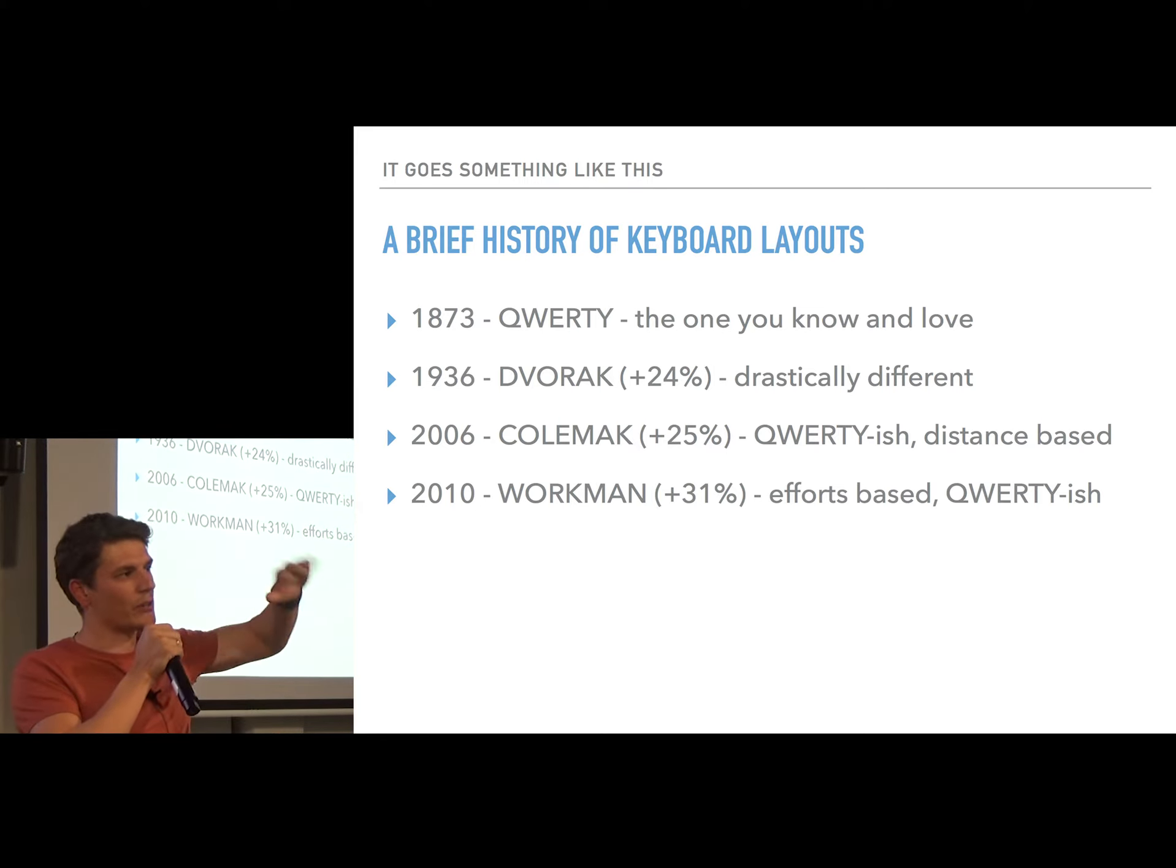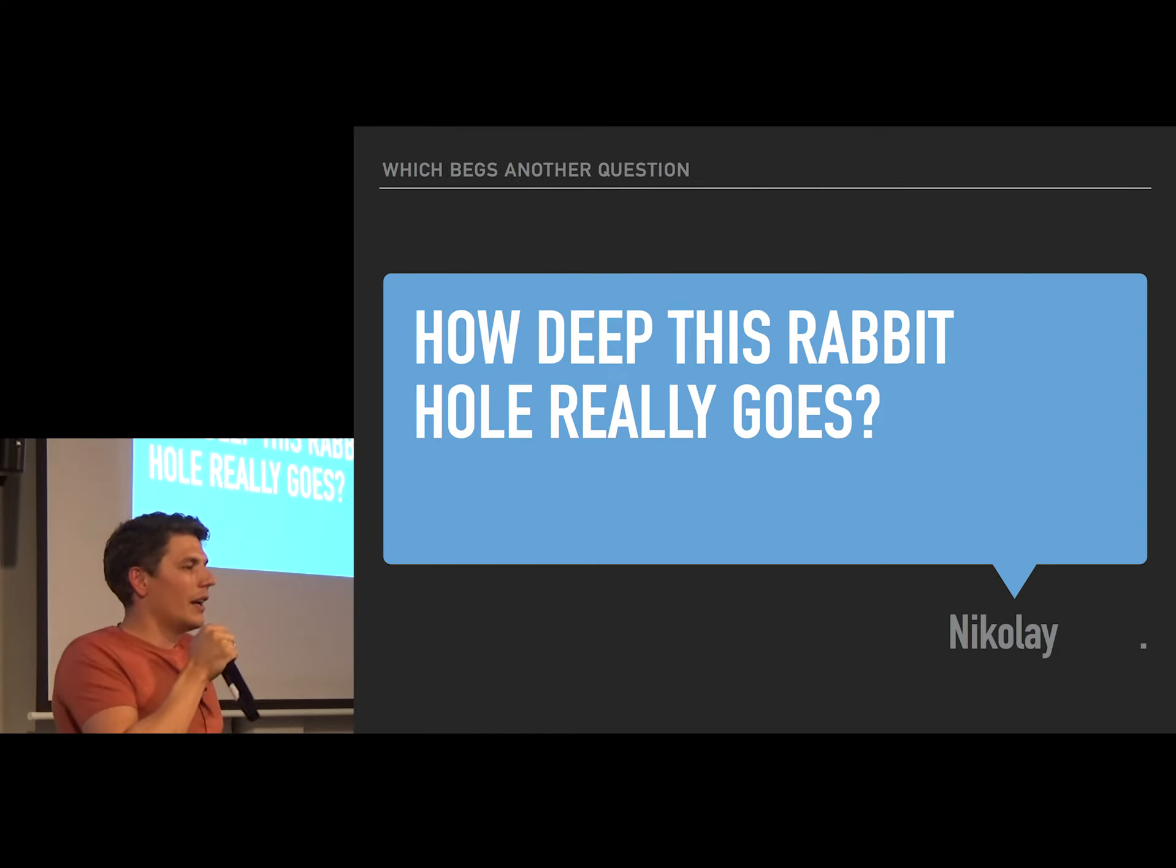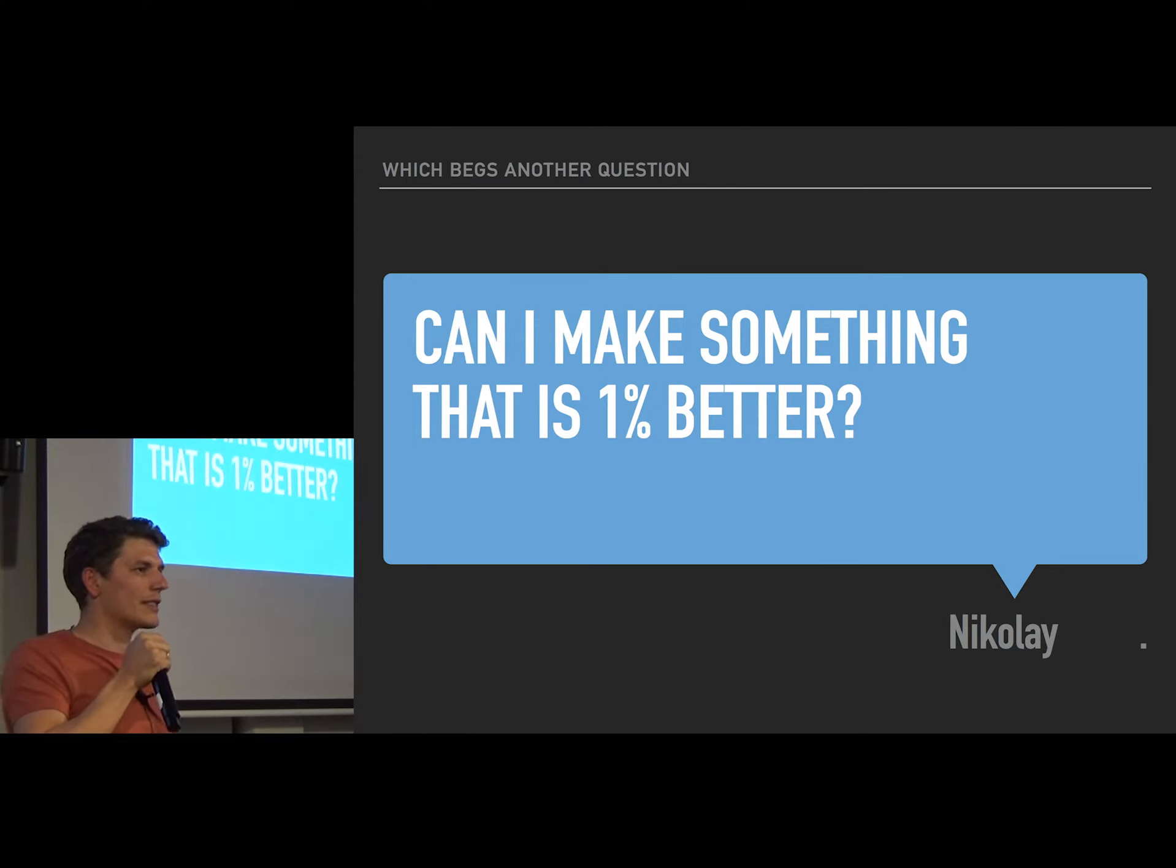So there is progression. There are a lot of people thinking about these problems. And it started, once I started to research the problem, I started to think, how deep does this rabbit hole really go? Where is the bottom of it? They are so drastically different. What actually makes a good layout? And I started to scratch my head. Can I make one better? If I just come up with something 1% more efficient than everything else, I'm good. My work on this planet is done.